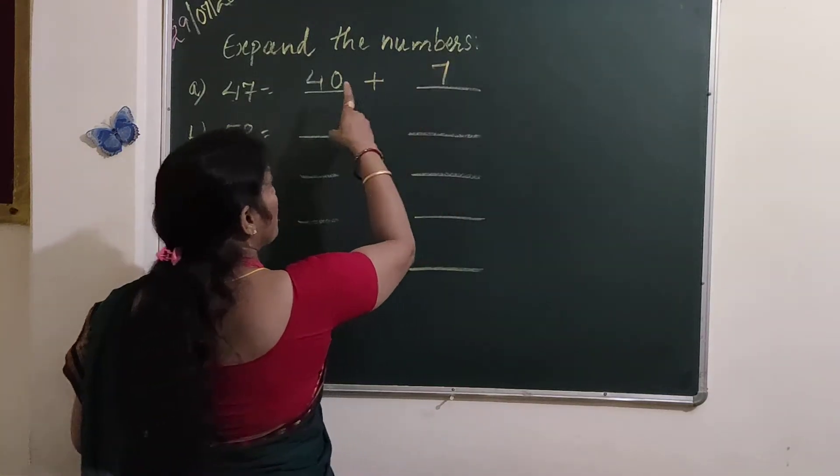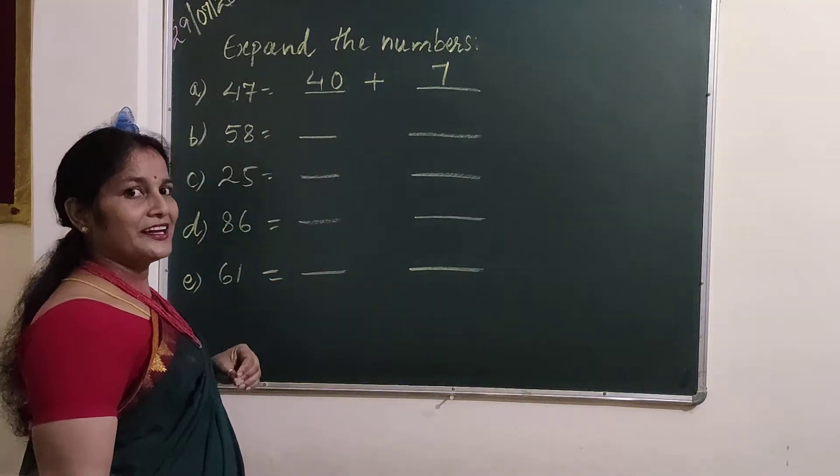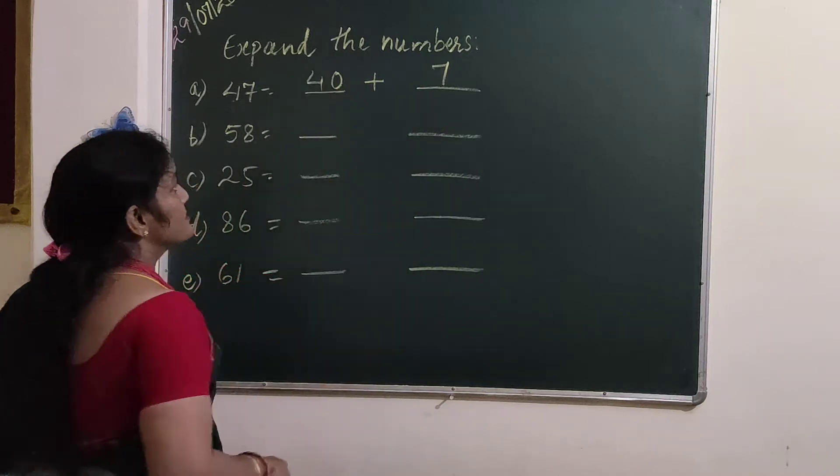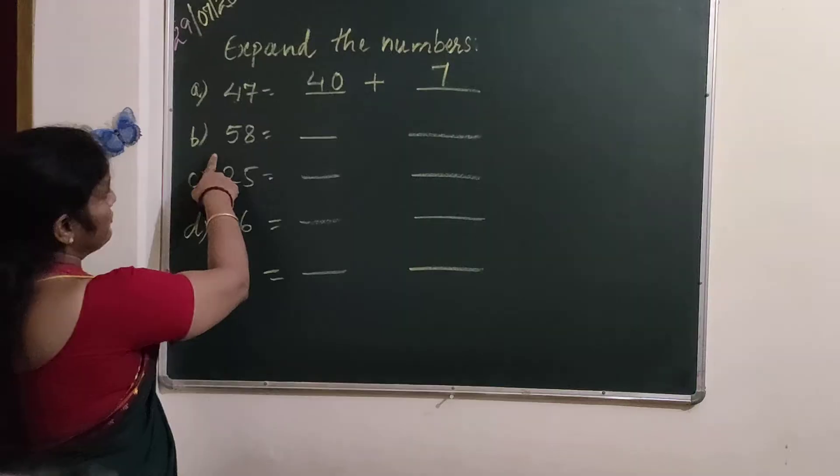Okay? So 47. Understand? 47. Just like that, here what you have to write? If it is 58.